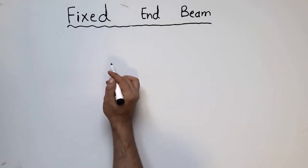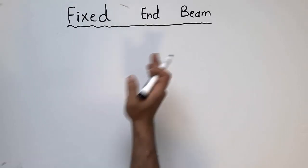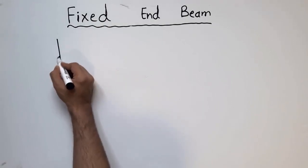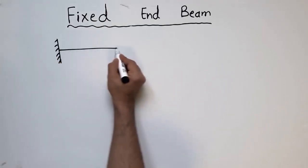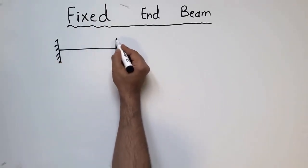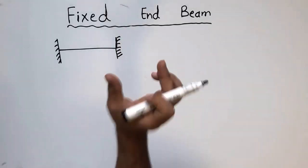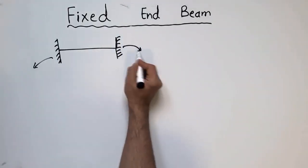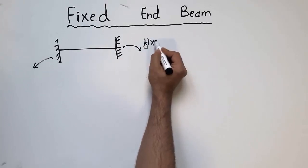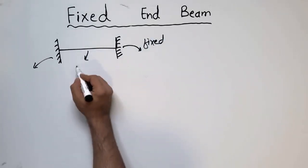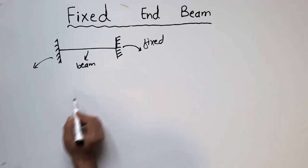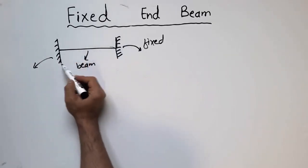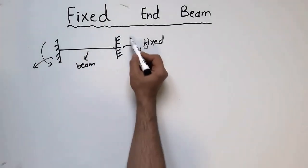This is the type of beam most commonly used in construction. It is generally represented as a horizontal member supported by two fixed supports, one at each end. These fixed supports can resist movement at both ends of the beam.